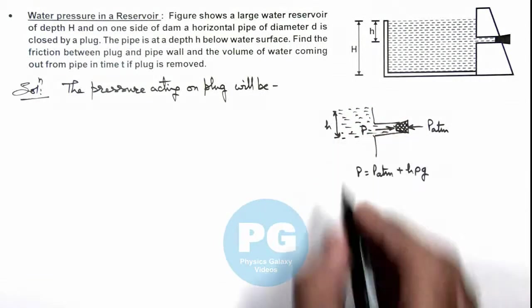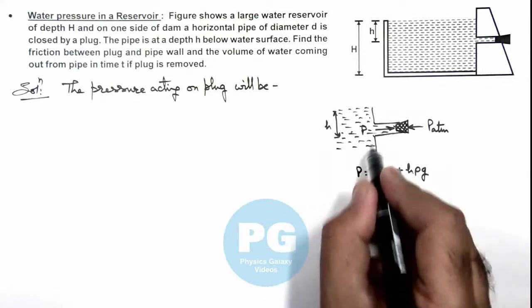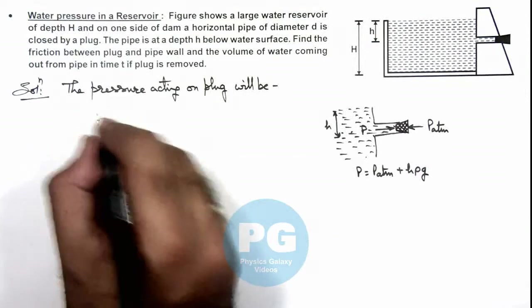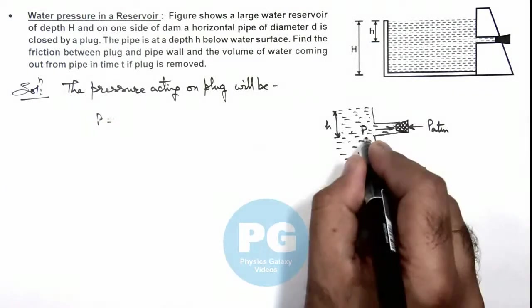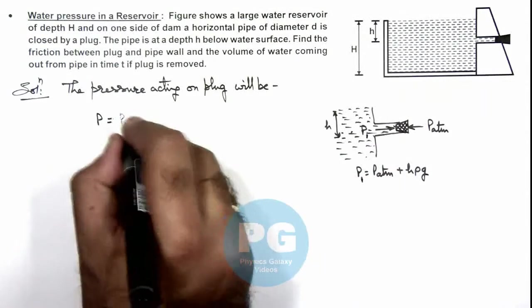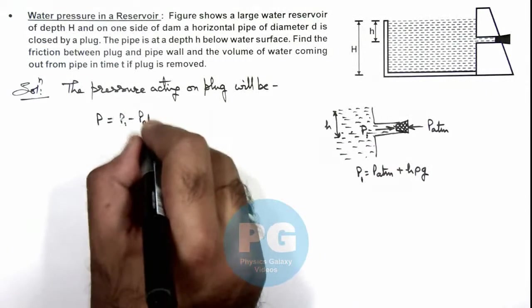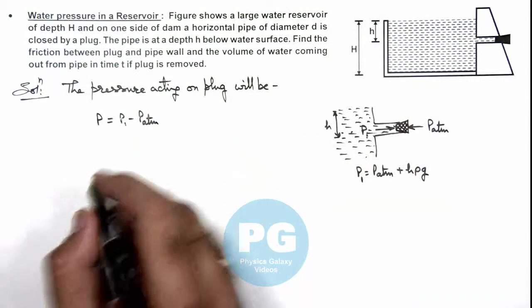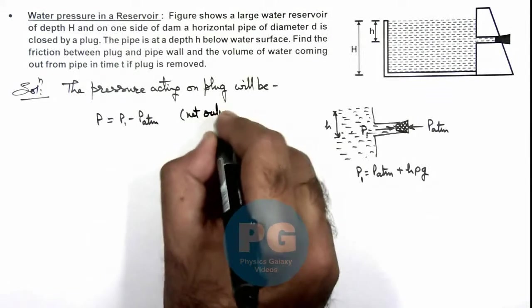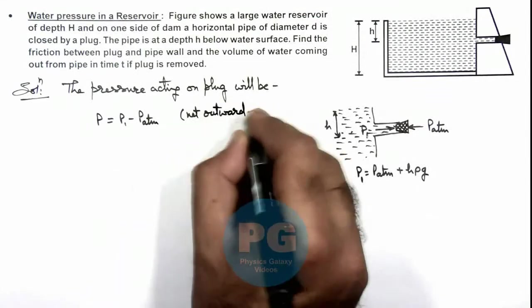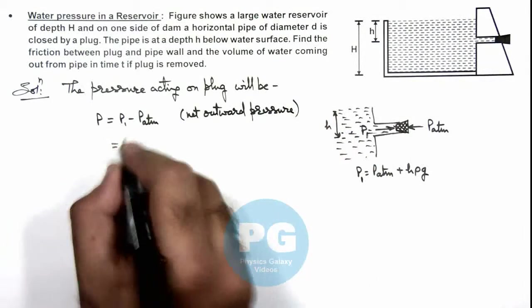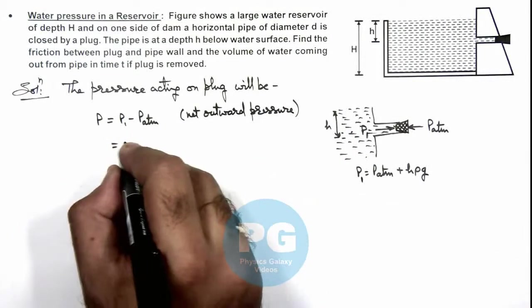So here we can see the net pressure acting on the plug. This will be p1 minus p atmospheric, that will be the net outward pressure acting on the plug. When we substitute p1, this is simply h ρ g.